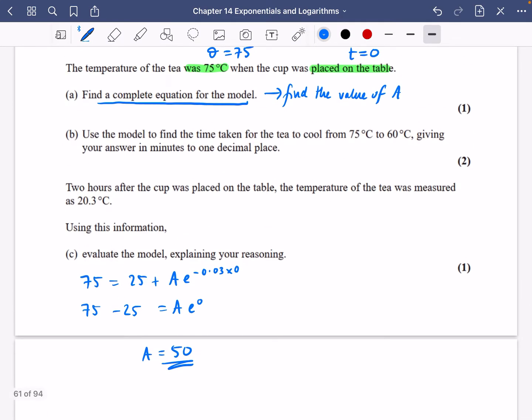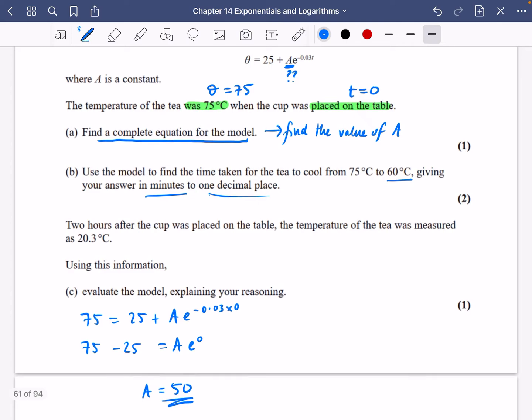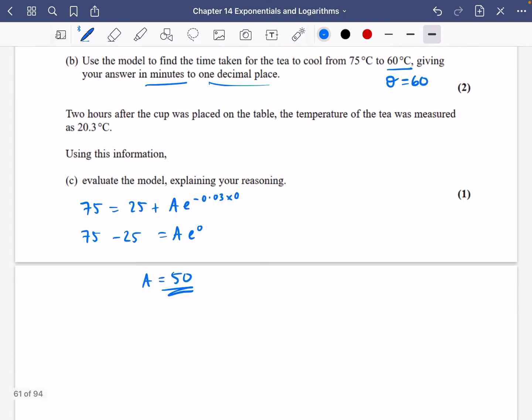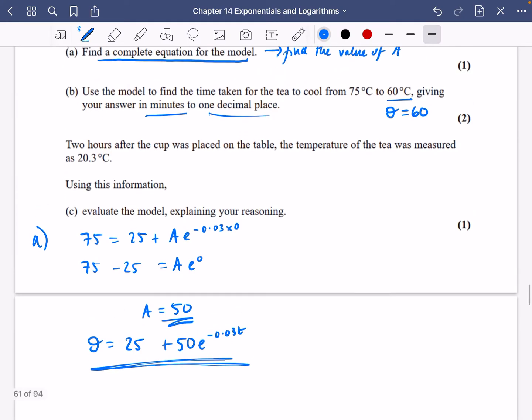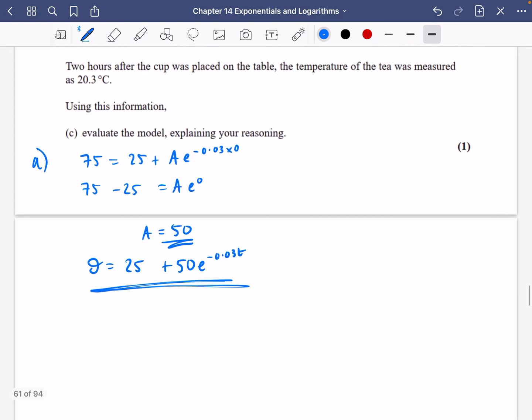I probably should have written the complete equation. The complete equation for the model is theta = 25 + 50e^(-0.03t), not just find A.